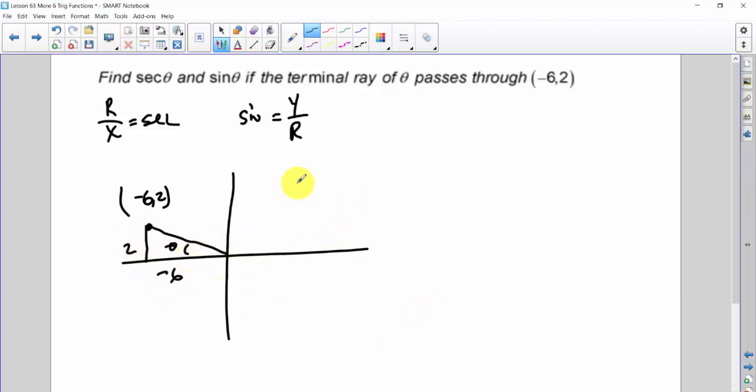I have negative 6 over 2 up. And now I'm going to find my r by taking Pythagorean theorem again. And x squared, negative 6, quantity squared, plus 2 squared, gives me the square root of 40, which is 2 root 10. Simplified.